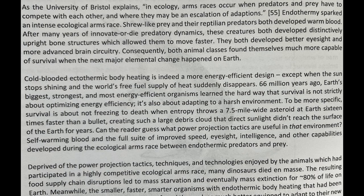Endothermia sparked an intense ecological arms race. Shrew-like prey and their reptilian predators both developed warm blood. After many years of innovate-or-die predatory dynamics, these creatures both developed distinctively upright bone structures which allowed them to move faster. They both developed better eyesight and more advanced brain circuitry. Consequently, both animal classes found themselves much more capable of survival when the next major elemental change happened on Earth.